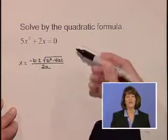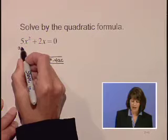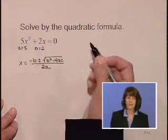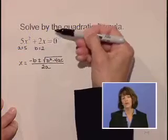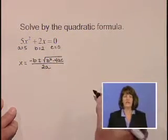Let's identify a, b, and c in our equation. a is equal to 5, b is equal to 2. There is no number term by itself, so for this case, c is equal to 0.